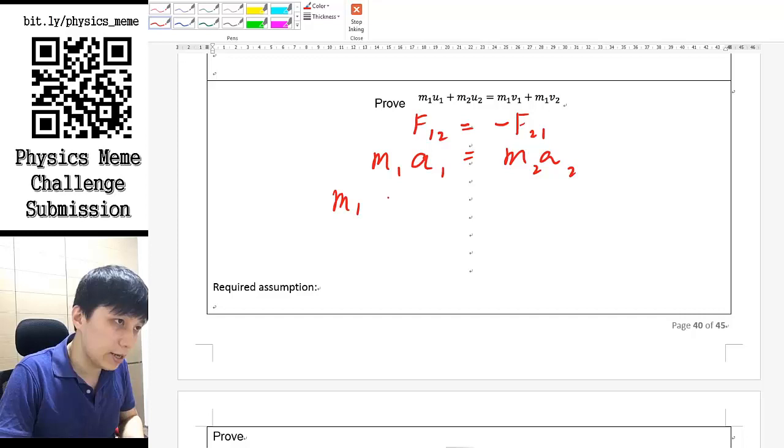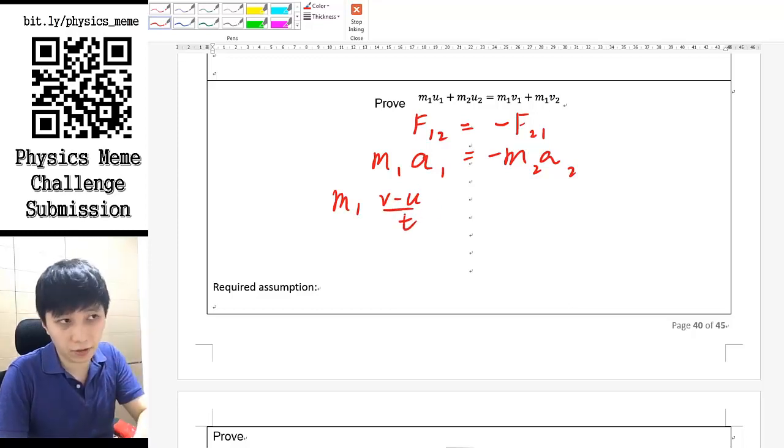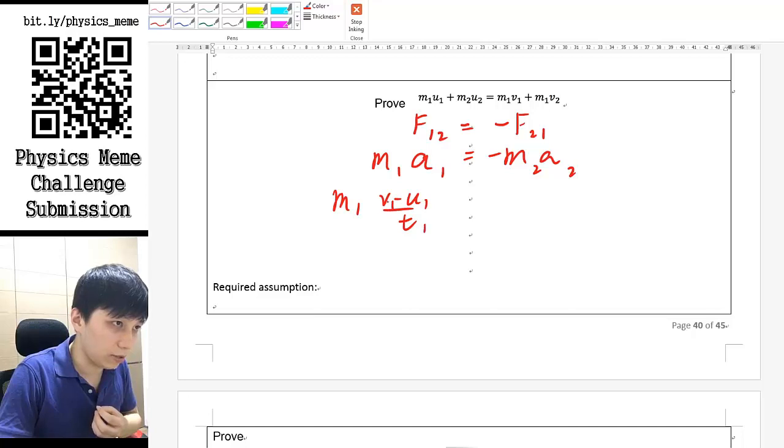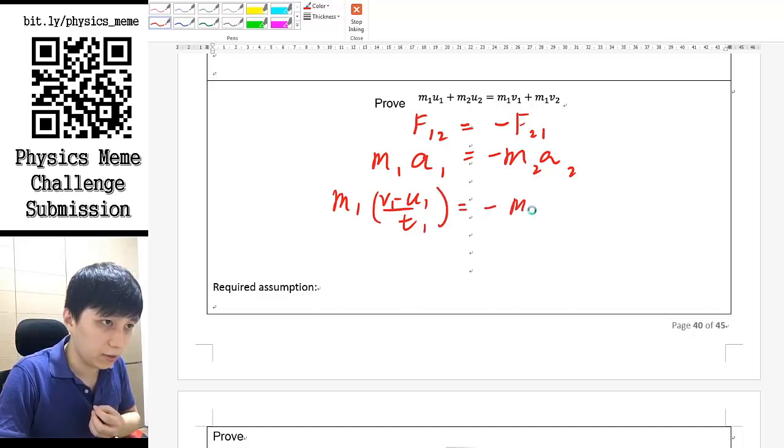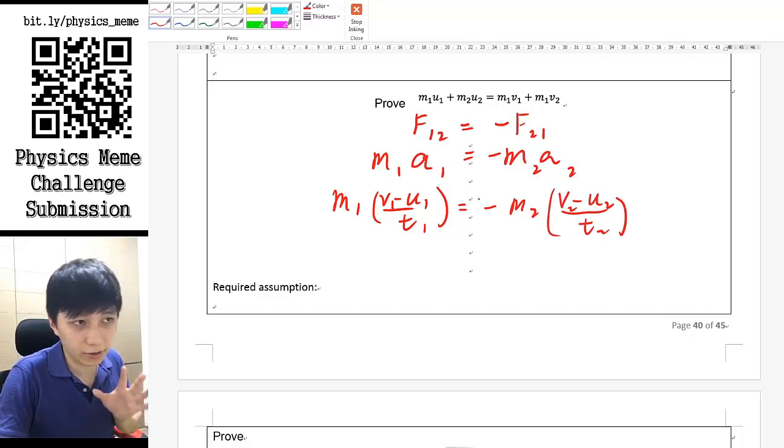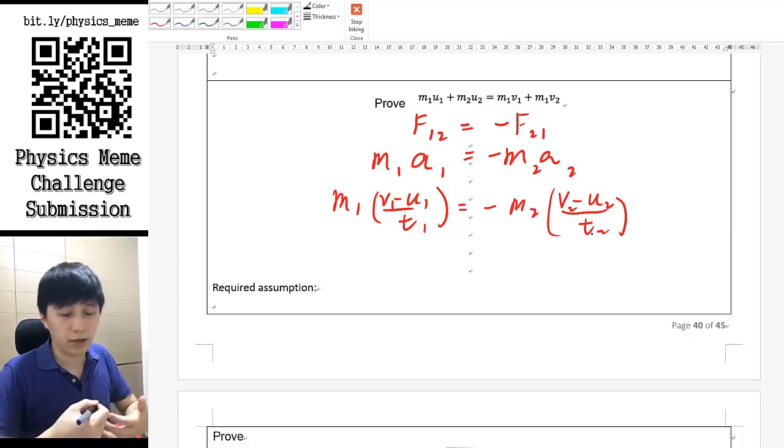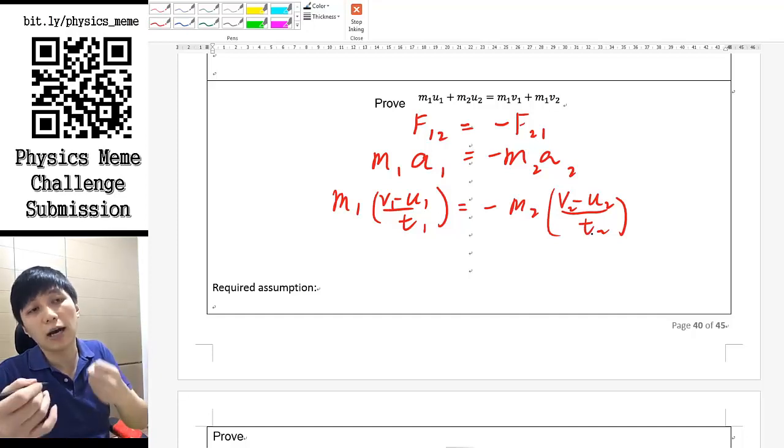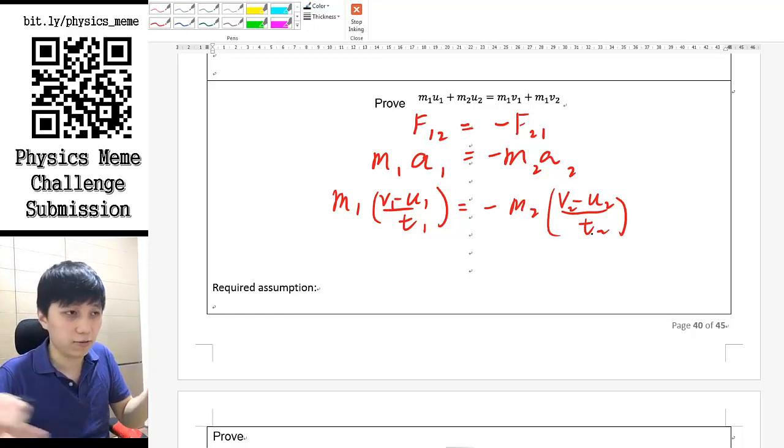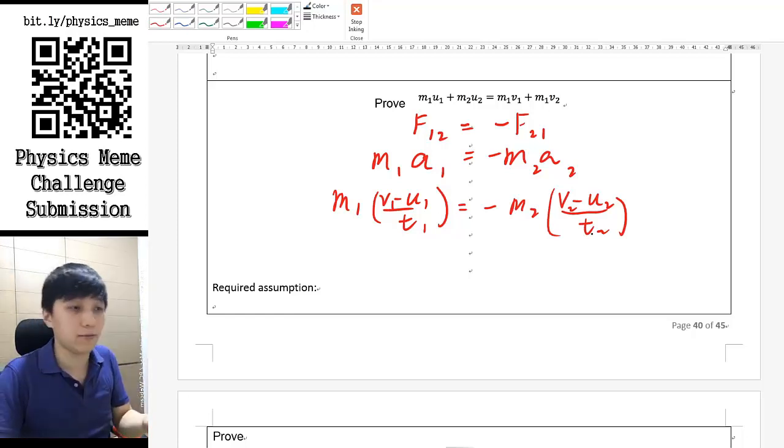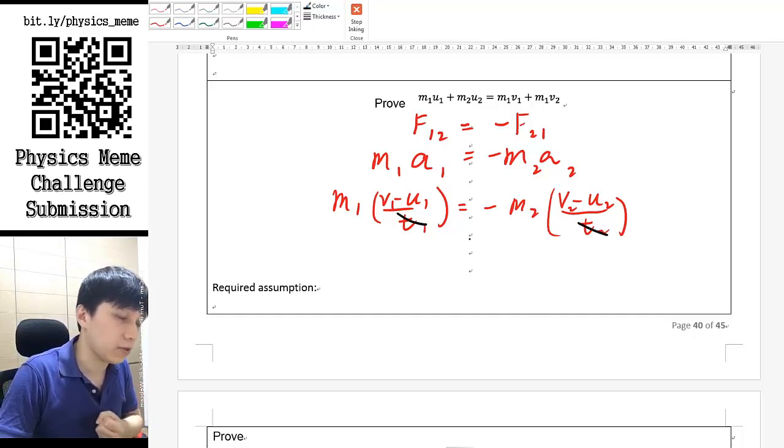This should be 1, this should be 2 for object 1 and 2. Same like what we talked about earlier, a is actually v minus u over t by the definition of acceleration. So 1 and 1 here, and then on the other side we still have the negative, v minus u over t for object 2. Notice there is still a negative here. What you have here is the time is in fact the same, because think about the impact time for two objects when they collide - they must have the same impact time. For example, if I punch your face, the time that my hand contacts your cheek would surely be the same as the time that your cheek is touching my hand.